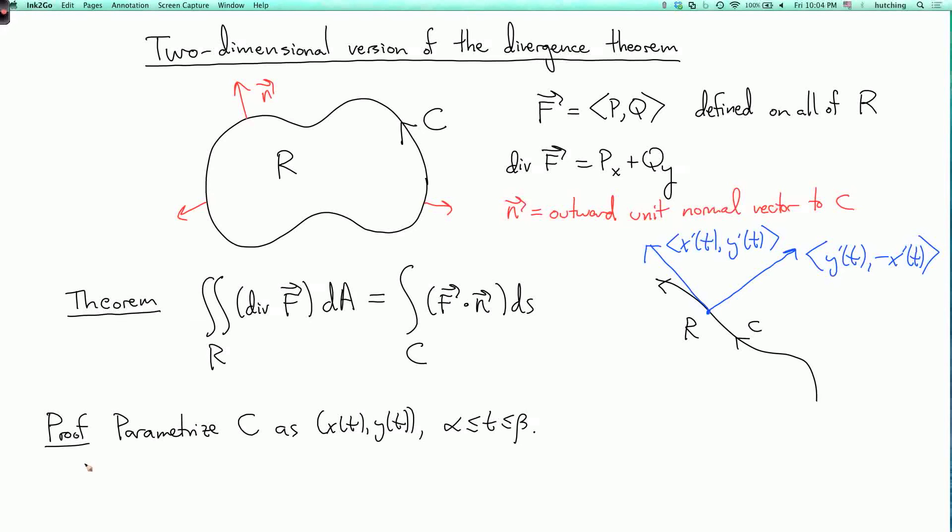So then, the integral over C of F dot N dS, so this is the integral with respect to arc length, is what? So it's the integral from alpha to beta of PQ dot N. Now, what's N? I haven't told you that yet. Because N is supposed to be a normal vector, a unit normal vector.